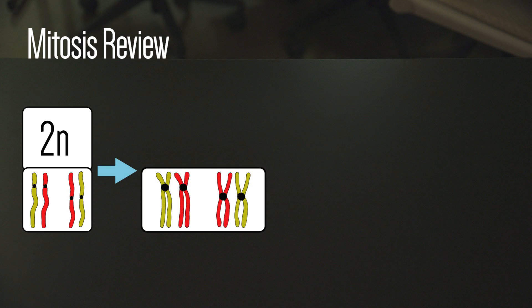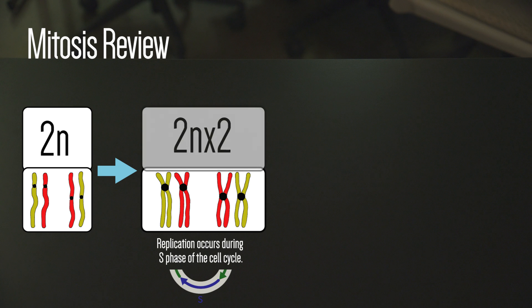Chromosomes have sister chromatids before mitosis begins, because chromosomes are replicated during the S phase of the cell cycle. When a cell has replicated chromosomes, we refer to it as x2 in the diagram.